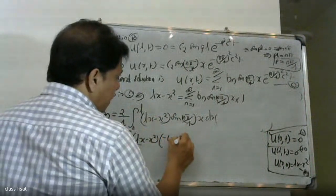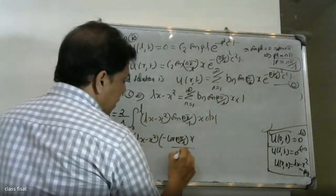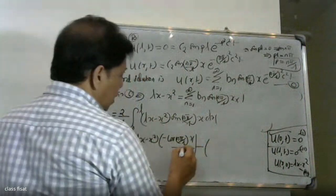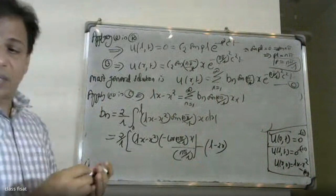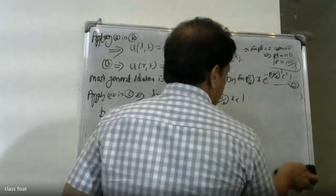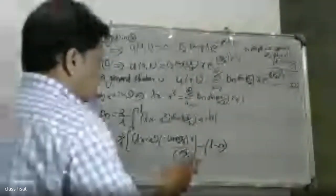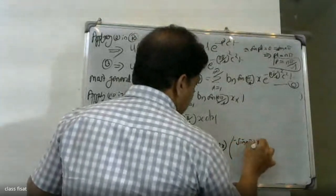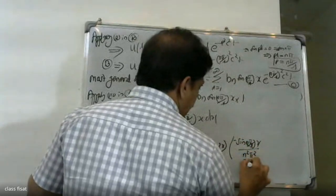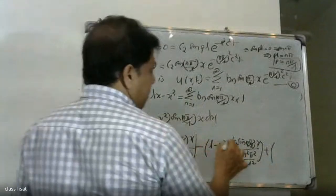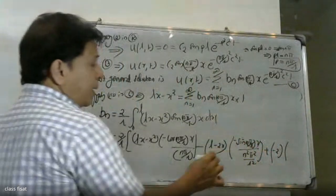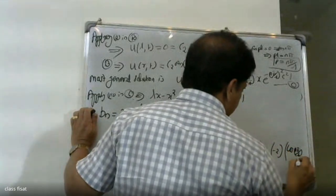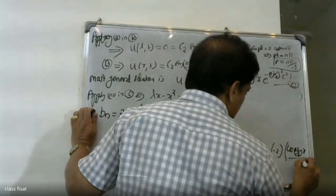To find Bn, we use the Fourier sine series. We integrate: Bn = (2/L)·∫₀ᴸ (Lx − x²)·sin(nπx/L) dx. Integrating by parts: first part gives −cos(nπx/L)·(Lx−x²)/(nπ/L), and differentiating (Lx−x²) gives (L−2x). Continuing integration by parts, the next term involves (−cos(nπx/L)/(nπ/L)) and sin(nπx/L)/(nπ/L)², with a further derivative giving −2, then −cos(nπx/L)/(nπ/L)³.